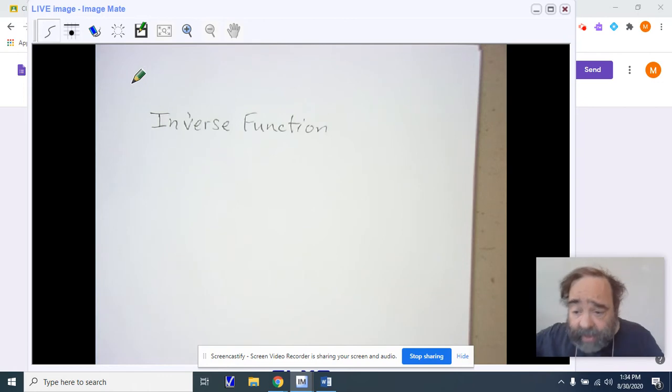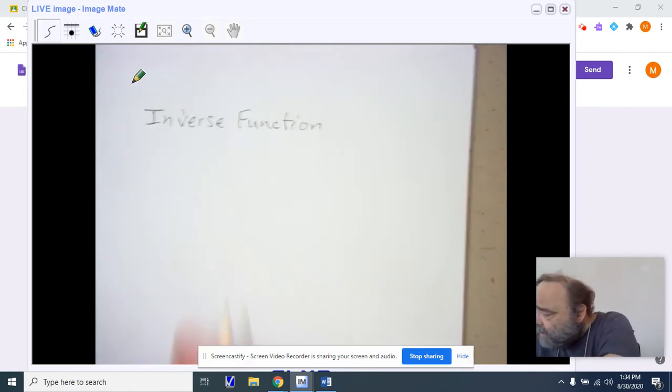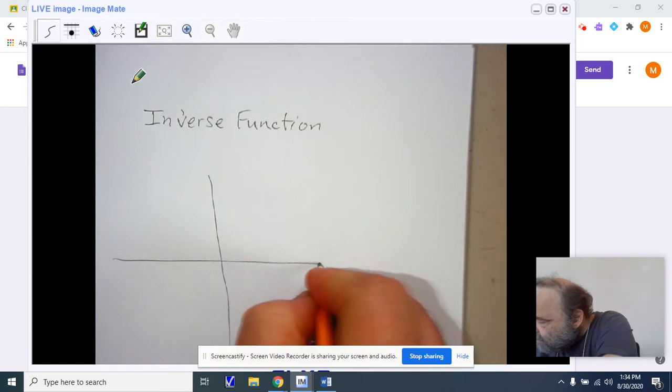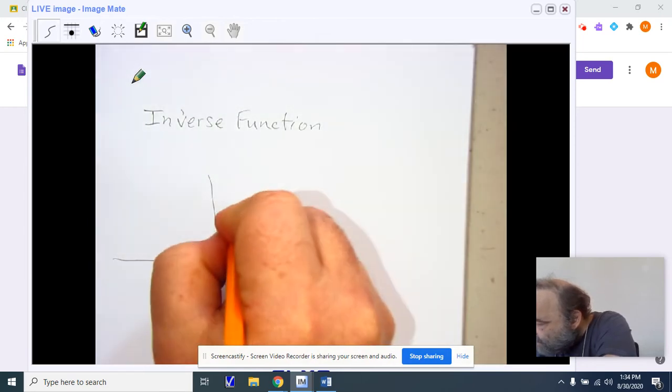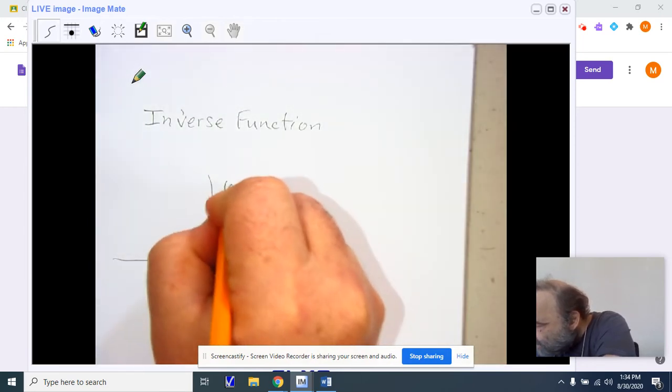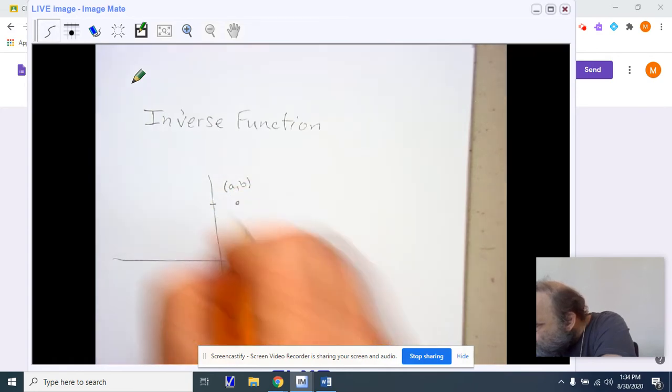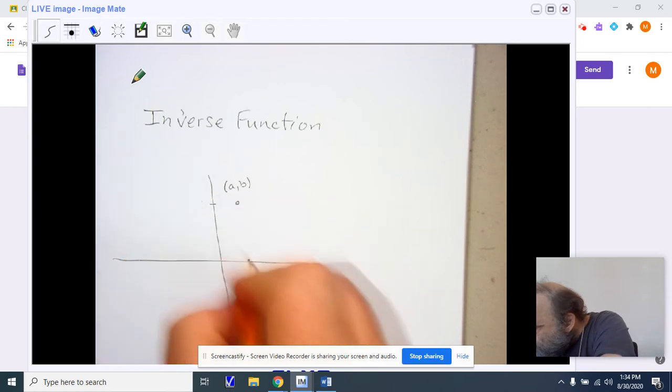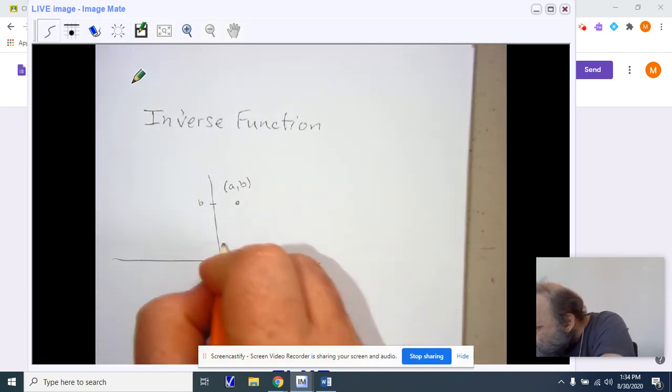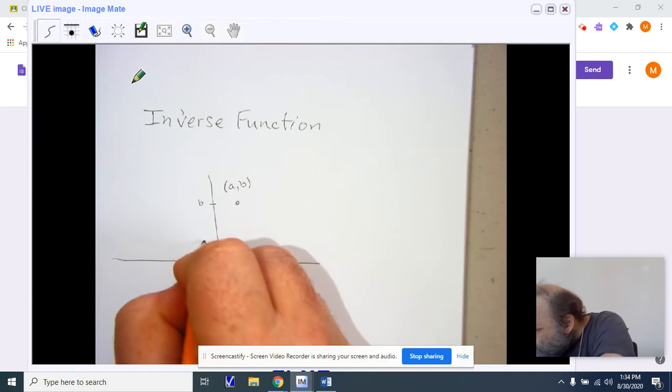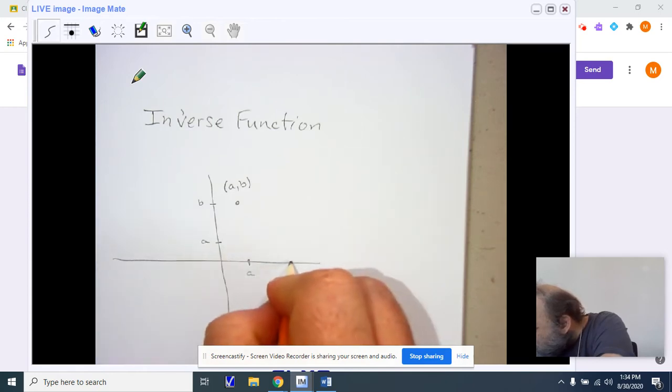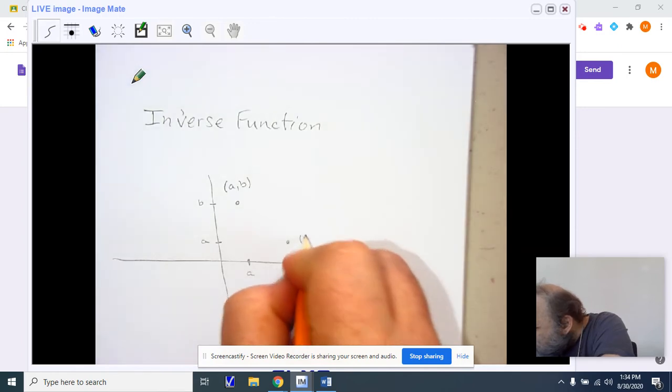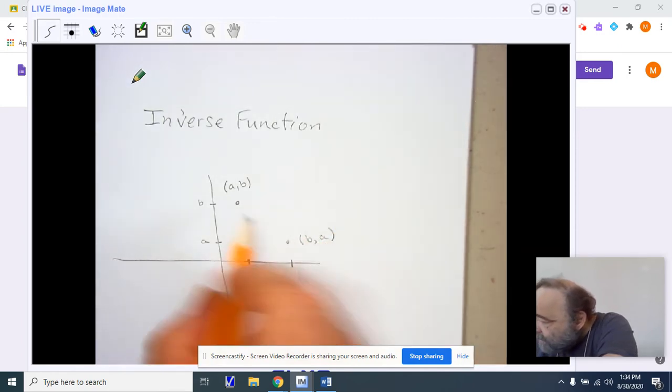A couple of other things about inverses. Inverses take a point, x, y, or let's call it a, b, and reflect it. So if this is b on my y-axis and a on my x, then I'm flipping them so that I can find the reflected point b comma a. Notice how the a and the b change positions.